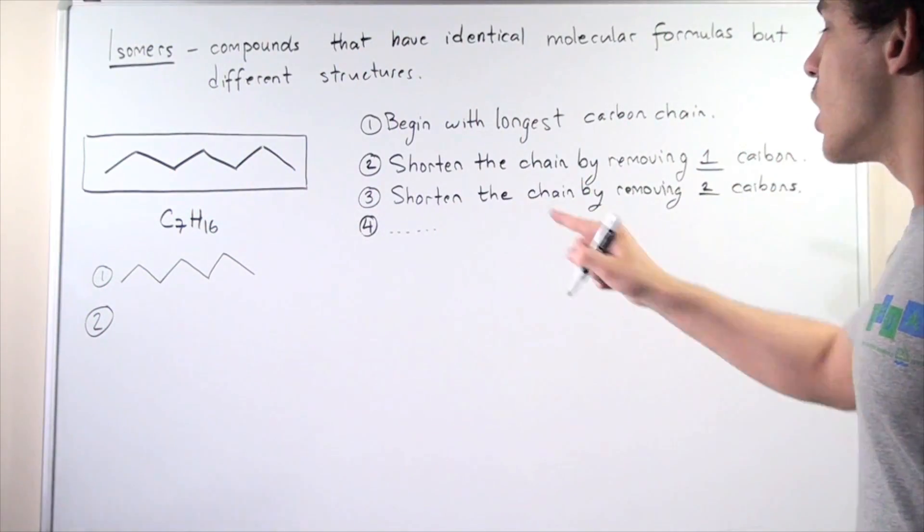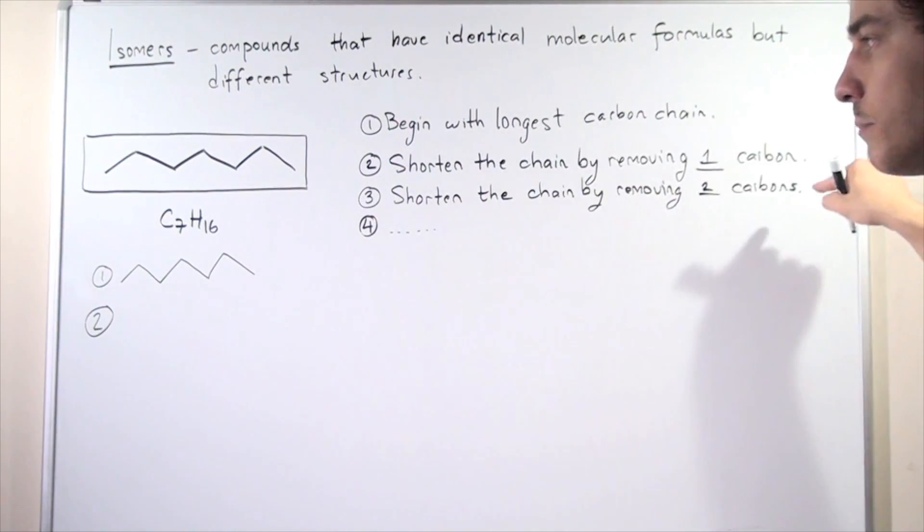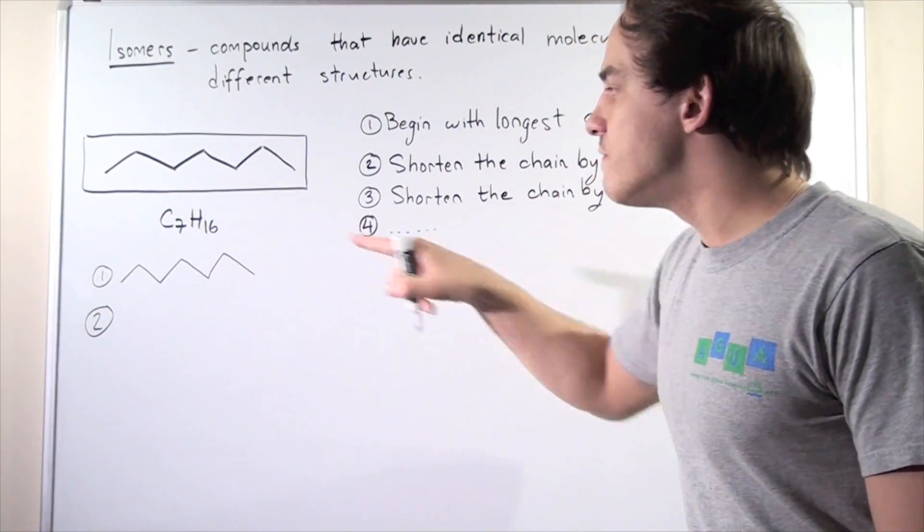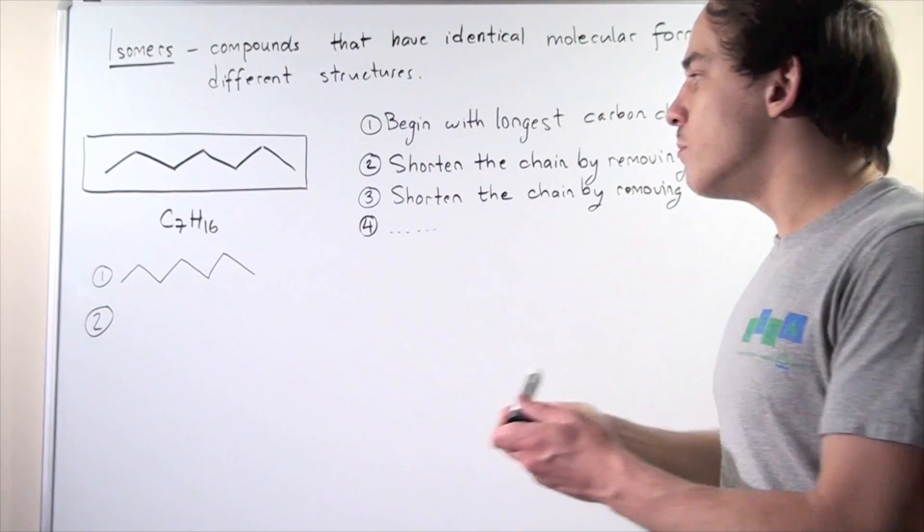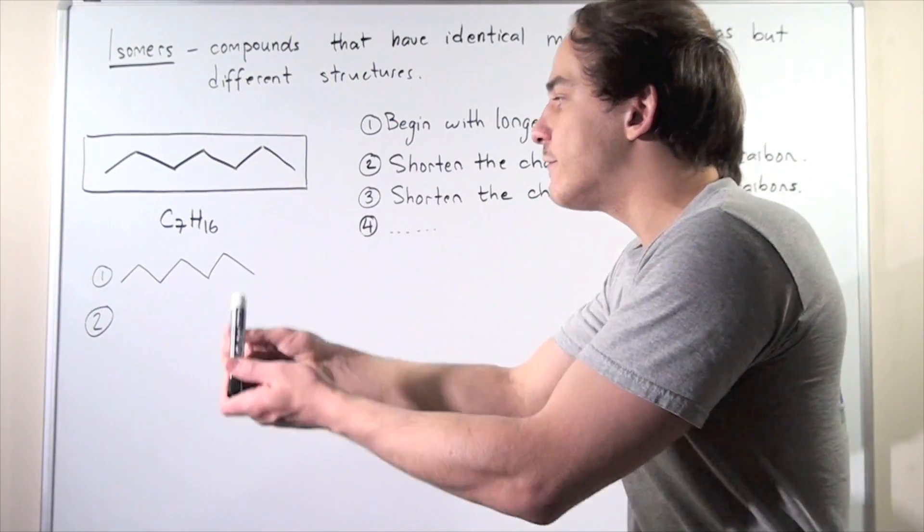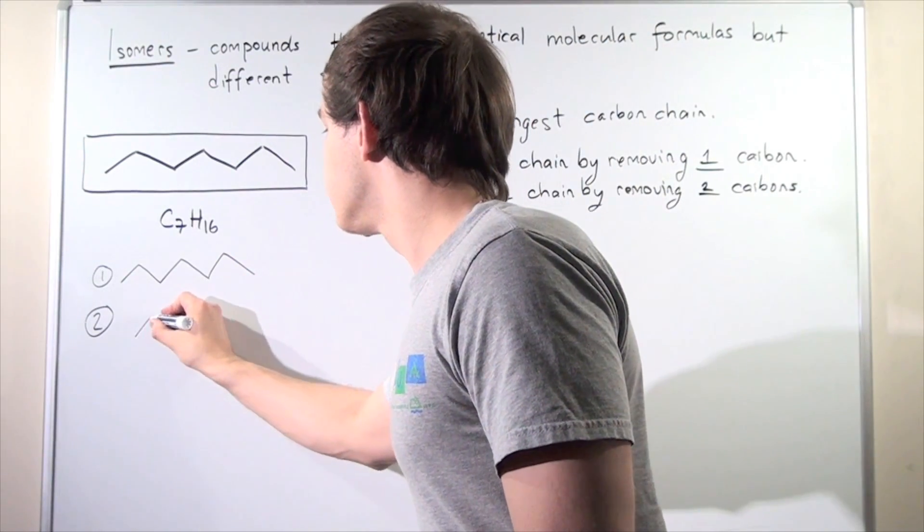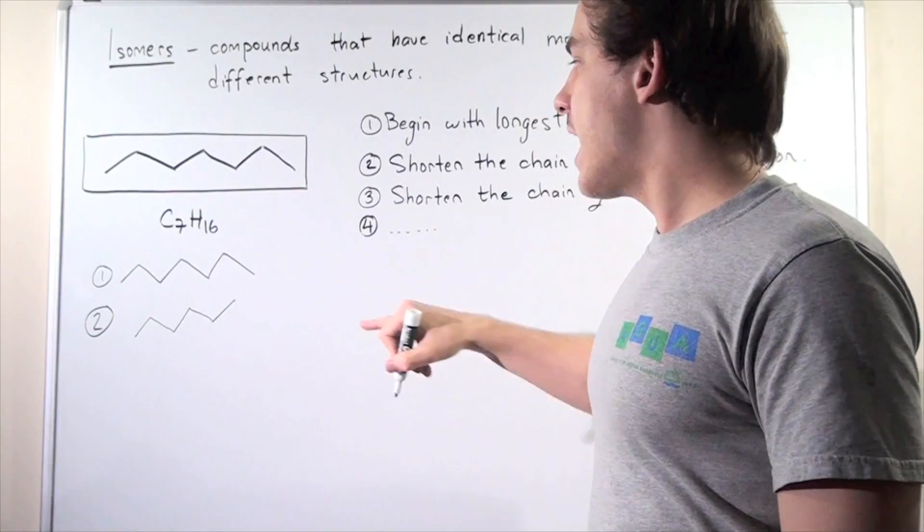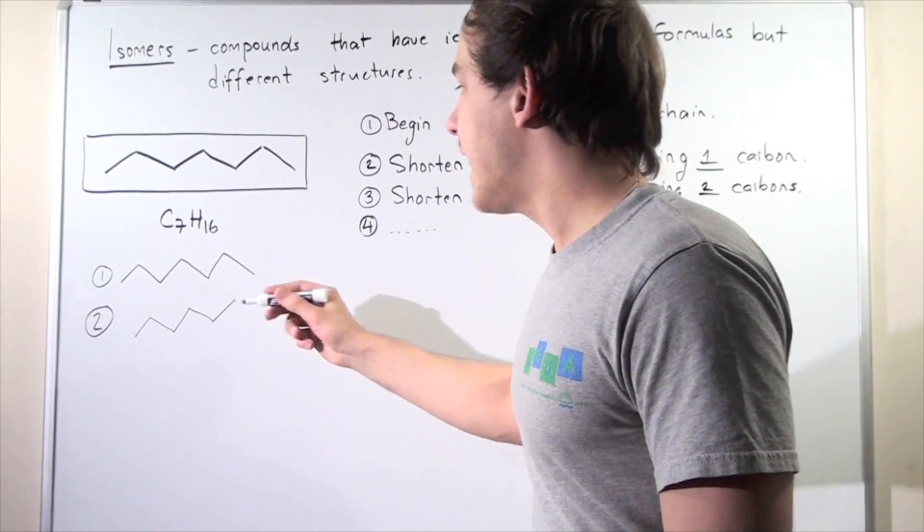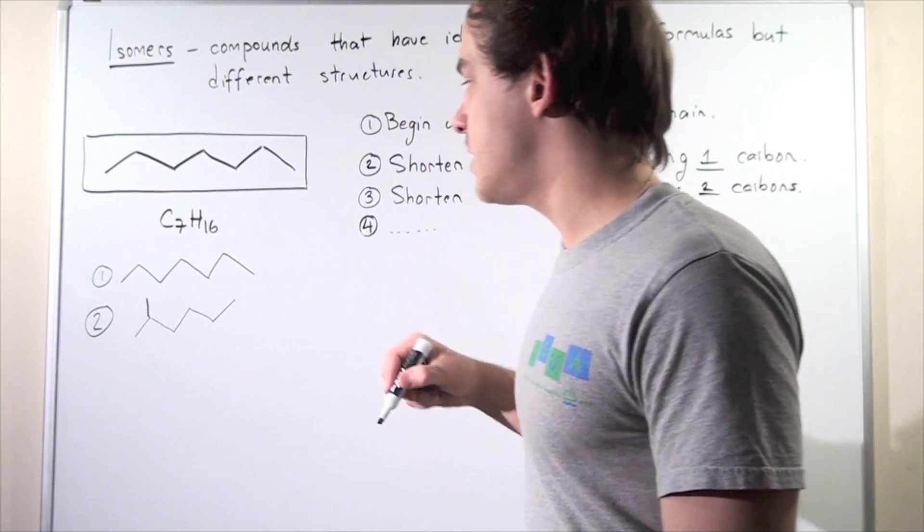So in step two, shorten the chain by removing exactly one carbon from the end of our chain. So we remove this carbon and then we place that carbon onto a different position. And now let's take that methyl group and place it onto the first position or the second position here.